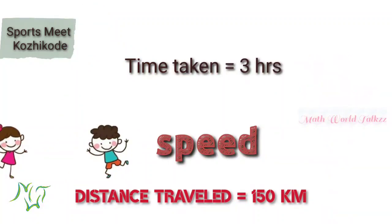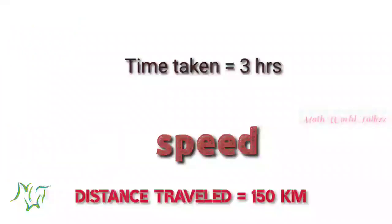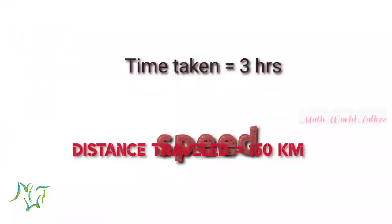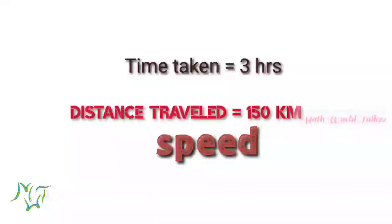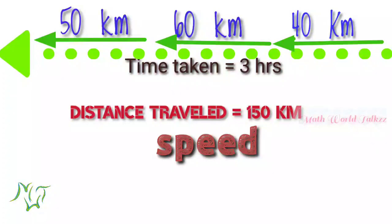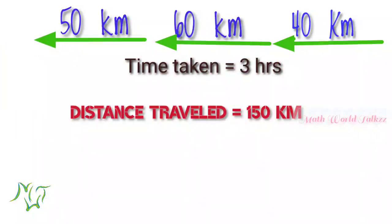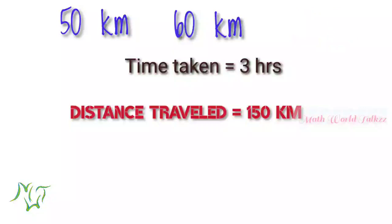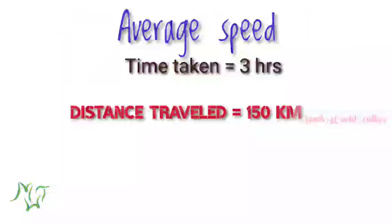Time taken for the traveling is 3 hours. The bus could not have the same speed in the whole journey. Maybe it is 40 in the first hour, 60 in the second hour and 50 in the third hour. In such an instance, we calculate the average speed.